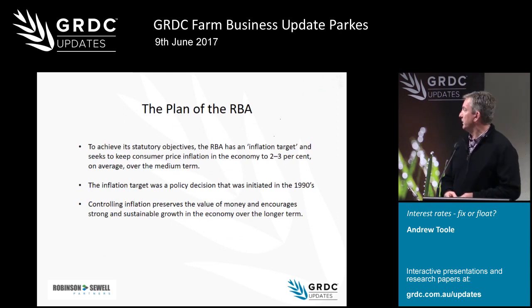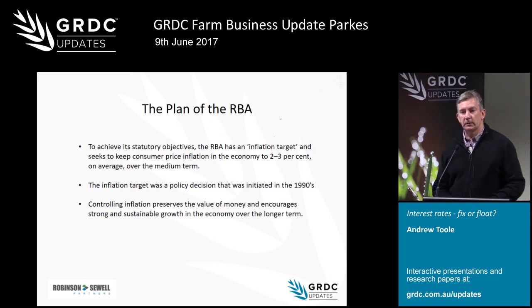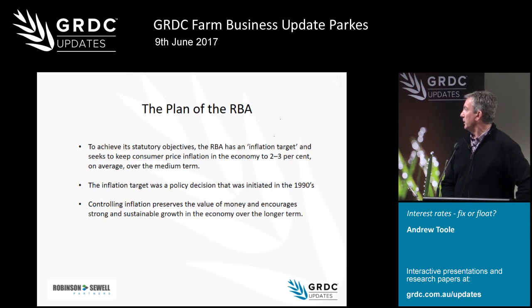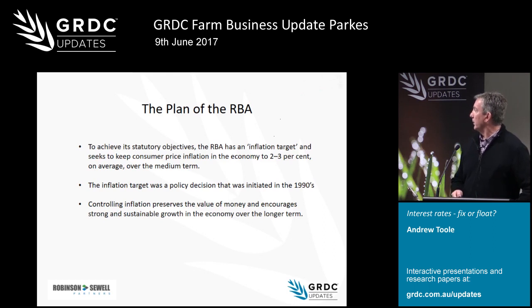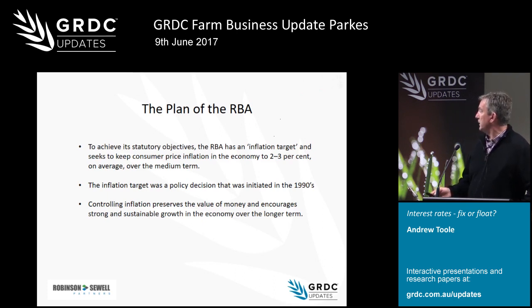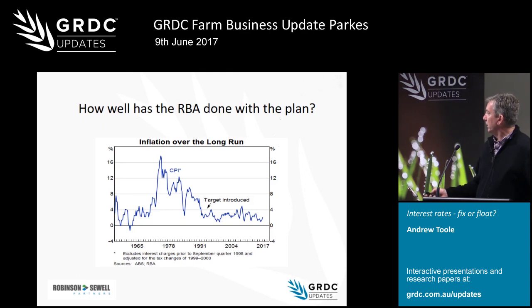One of the RBA's big objectives is to control inflation. You might be aware of the target brought in around the 1990s to keep inflation around that desired two to three percent long-term average. The idea was to preserve the value of money and maintain strong and sustainable growth in the longer term. Those familiar with the period of high inflation and high interest rates would know it was a very volatile period, so the objective from that policy introduced in the 1990s was to bring that under control.